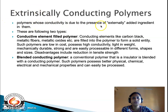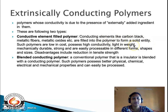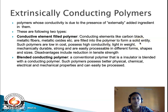Extrinsically conducting polymers are of two types. The first is conductive element filled polymer, where conductive elements like carbon black, metals, or metal oxides are filled into the polymer, forming a solid entity. These polymers owe their conductivity to the external agent introduced into the polymer chain. Such polymers are low in cost, have high conductivity, are light in weight, mechanically durable, strong, and can be easily processed in different forms and shapes. A disadvantage is reduction in tensile strength.